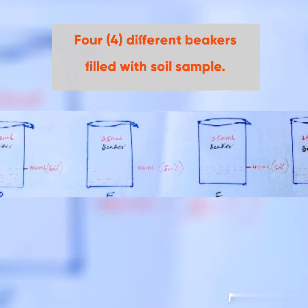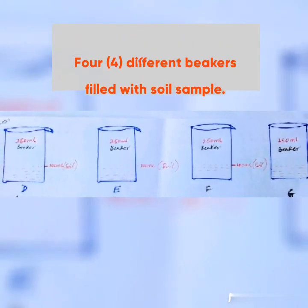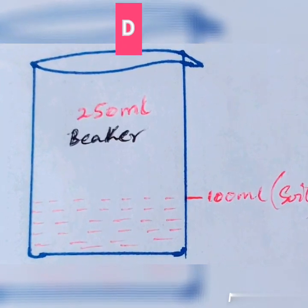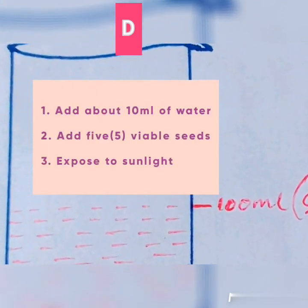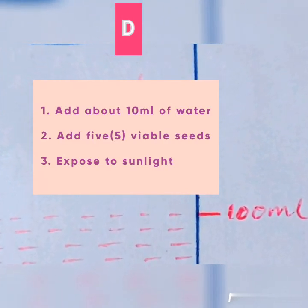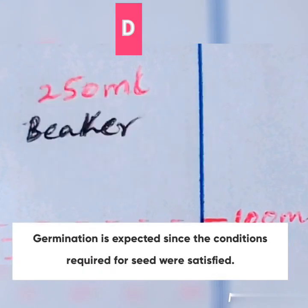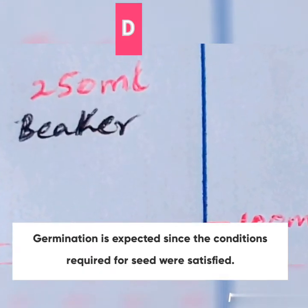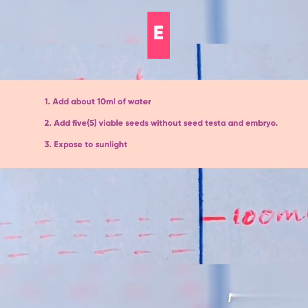Let's look at specimens D, E, F, and G — there are four beakers each filled with a soil sample. To the first beaker labeled D, about 10 mls of water were added, five viable seeds, and the beaker was exposed to sunlight. Germination is expected since all the conditions were satisfied.